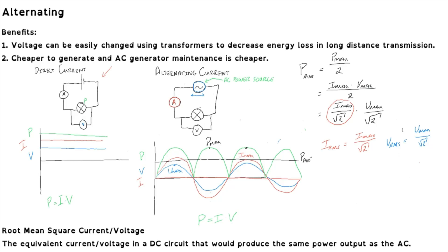This allows us to perform the usual Ohm's law calculations in an alternating current circuit just as we would in a direct current circuit. The only difference is that there are now two possible currents and voltages: the RMS value and the maximum value. In most questions, when a device is rated at, say, 240 volts, that is always the RMS voltage. The RMS value is what is given unless stated otherwise — for example, if they explicitly say maximum voltage or maximum current.